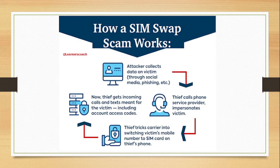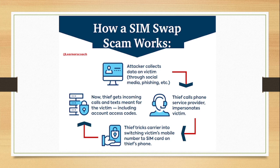This diagram shows the step-by-step way the SIM swap scam works. The first step is monitoring — the attacker does eavesdropping on your social media platforms and may conduct email phishing, sending you a link that looks like a legitimate email so you provide confidential information. The attacker collects data on the victim, learning where you work and where you bank.